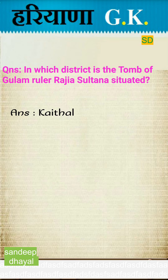In which district is the tomb of Ghulam ruler Razia Sultana situated? Answer: Kaithal district. Razia Sultana died in the year 1240. Thanks friends for watching. If you like this video, please comment and share with your friends, and don't forget to subscribe to my channel.